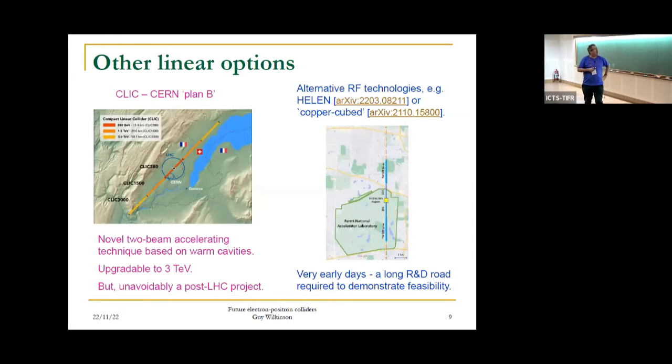Before finishing discussion about linear machines, we should acknowledge other plans on the table. There's a CERN Plan B, which is CLIC, based on very novel technology, which could take you up to quite high energies. This is a project with quite a long time scale. Recently, ideas have come from the US about things that could conceivably be done at Fermilab based on new RF technologies. But these come with caution - there's a very long R&D road ahead.